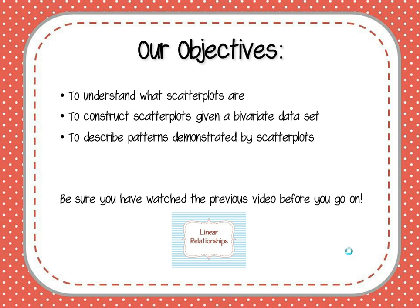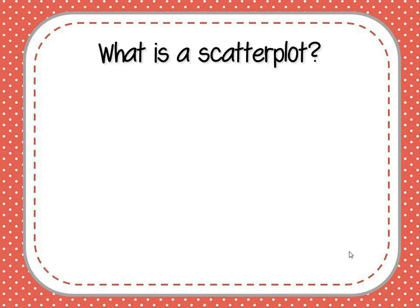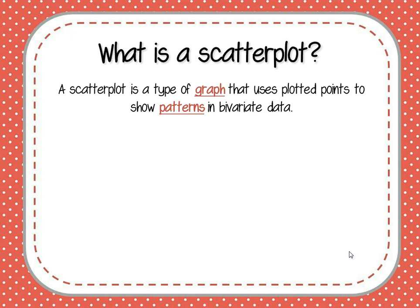Okay, let's get started. What's a scatterplot? Well, a scatterplot is a type of graph that uses plotted points to show patterns in bivariate data. A quick reminder: when you see words in red like this, it's because they correspond to a blank in your notes, so you should be copying that down into your notes.